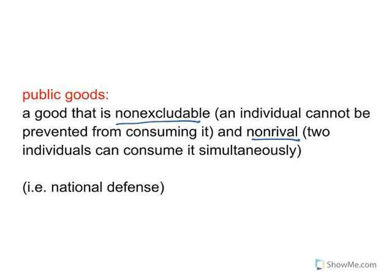Non-excludable means that an individual cannot be prevented from consuming it — you can't stop someone from using it. Non-rival means two people can be using it simultaneously. The classic example is national defense: you can't stop someone from being protected by the military, and the military can protect multiple people at the same time. We'll see later why it makes most sense for the government to provide these types of goods.